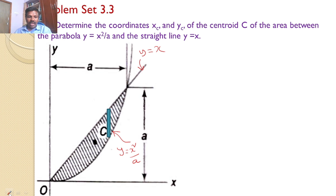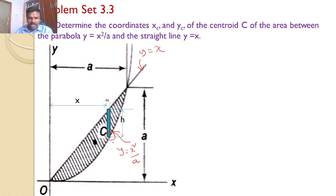For that, I will consider a small strip which is at a distance x from the y-axis and has a width dx. Let h be the height of the strip. The bottom end of this strip lies on the curve y = x²/a and the top end is on the line y = x. We define this bottom distance as y1 and the top distance as y2.